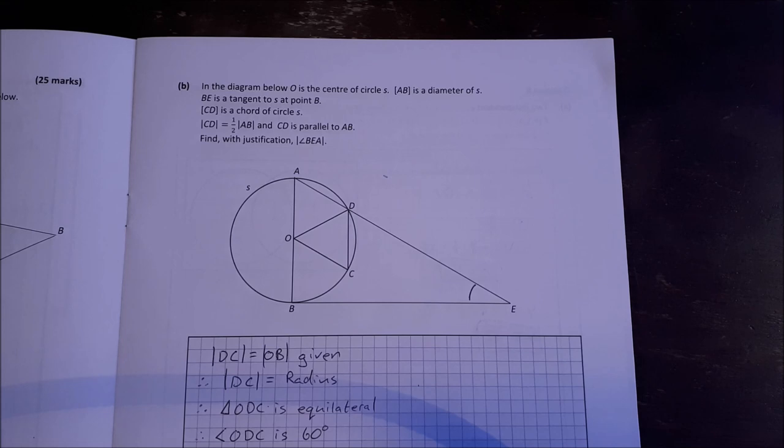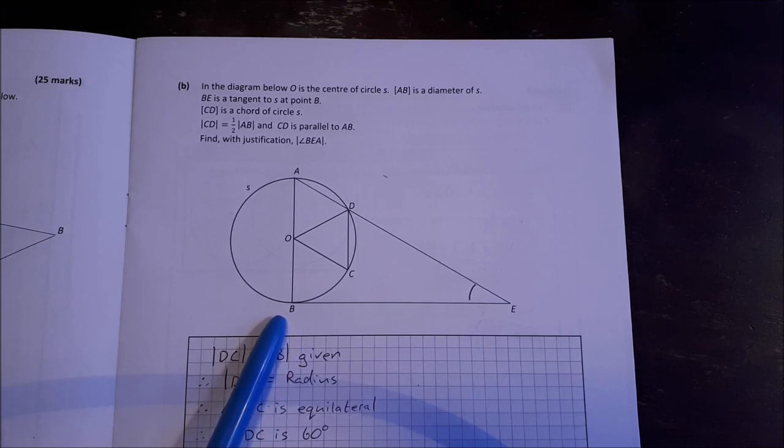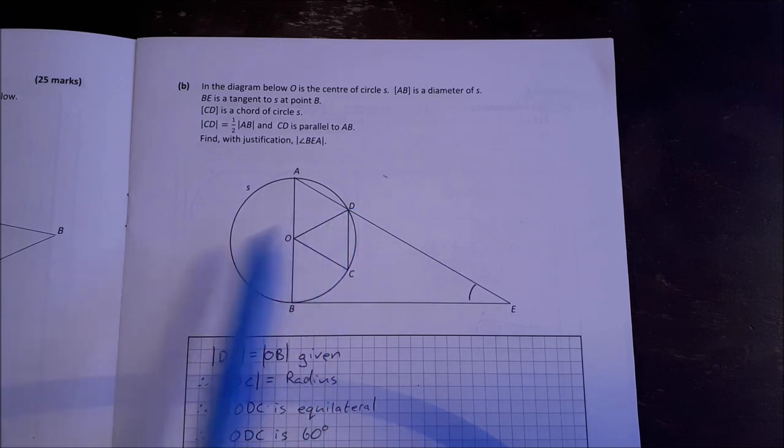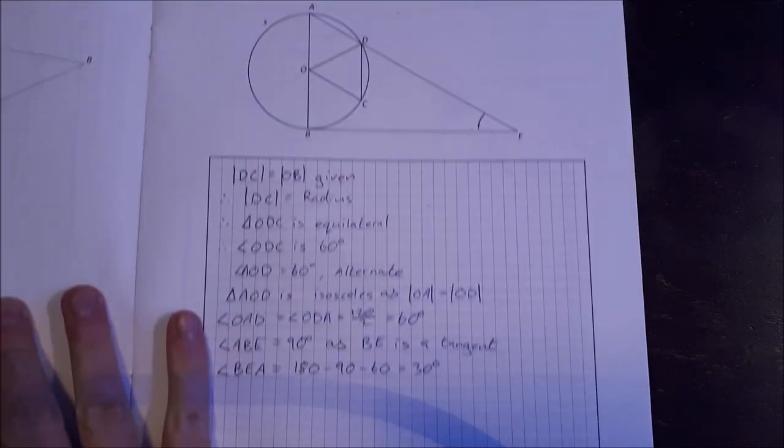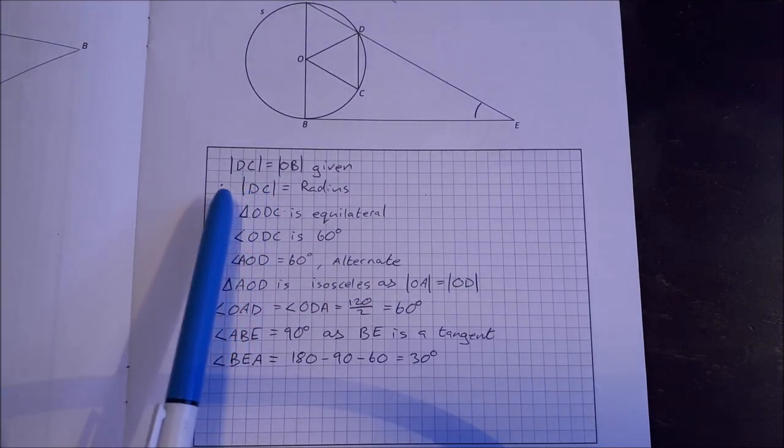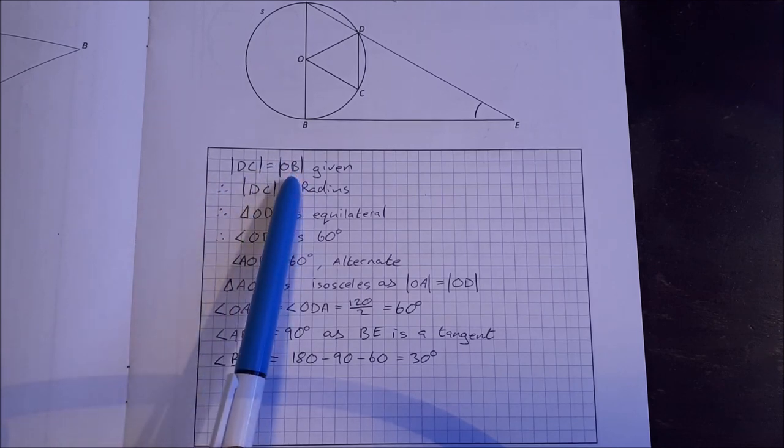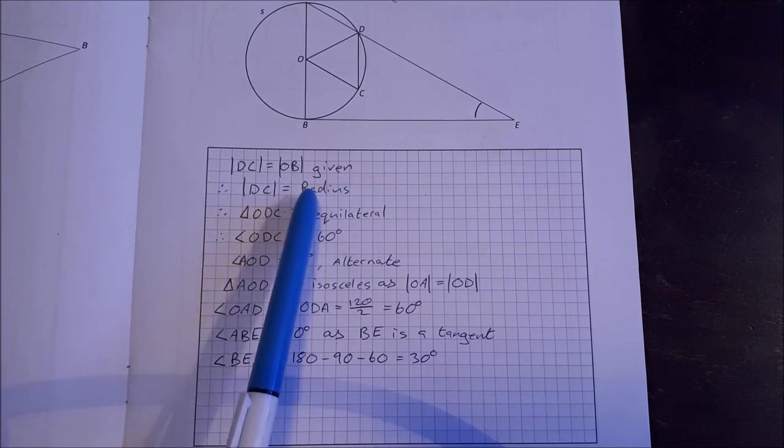Part B. In the diagram below, O is the center of the circle S and AB is the diameter of S. BE is a tangent to S at point B. CD is a chord. CD is half AB. So CD is half of AB and is parallel to AB. Find with justification, the angle BEA. So here's the solution for that. The side DC is equal to the side OB or the length OB. That's given. Therefore, DC is also a radius.